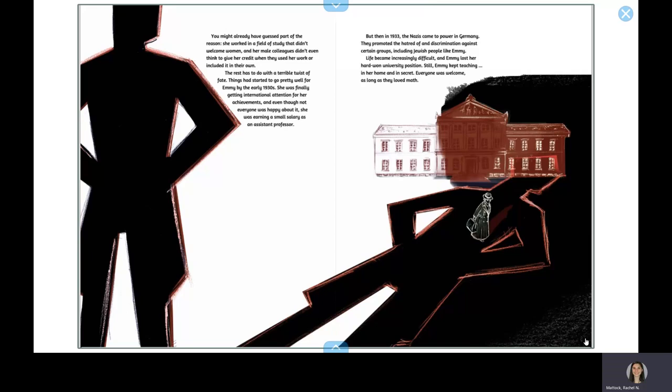But then, in 1933, the Nazis came to power in Germany. They promoted the hatred of and discrimination against certain groups, including Jewish people like Emmy. Life became increasingly difficult, and Emmy lost her hard-won university position.